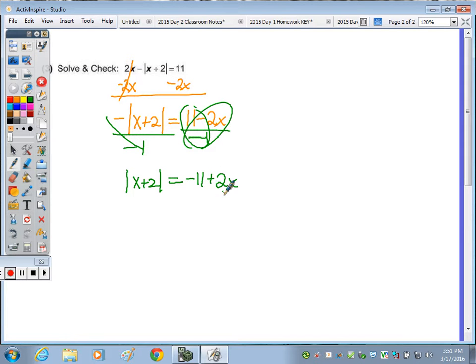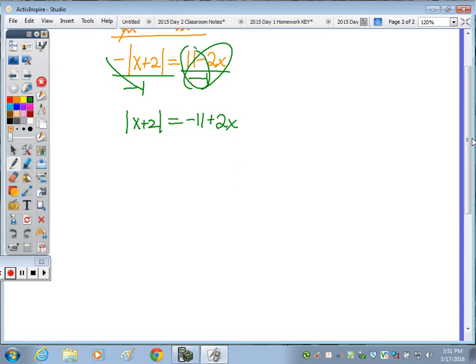So now we can break it down into our two equations. Again, the x plus 2 stays the same. For one of them we keep the negative 11 plus 2x the same, and then for the other we're going to negate that. When I negate negative 11 plus 2x, it becomes positive 11 minus 2x. Now to solve both...